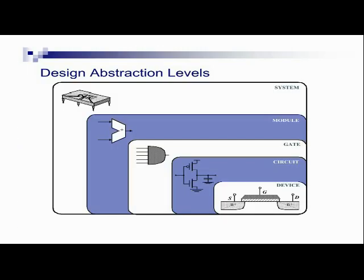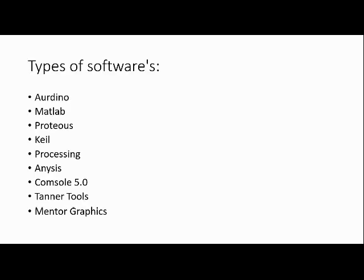These are the design abstraction levels: system-on-chip, modules, gates, circuits, and devices. A number of devices connected together form a circuit. A number of circuits placed on a single die form a gate. A number of gates performing some operations form a module. And when n number of modules are integrated on a single die, we call it a system.